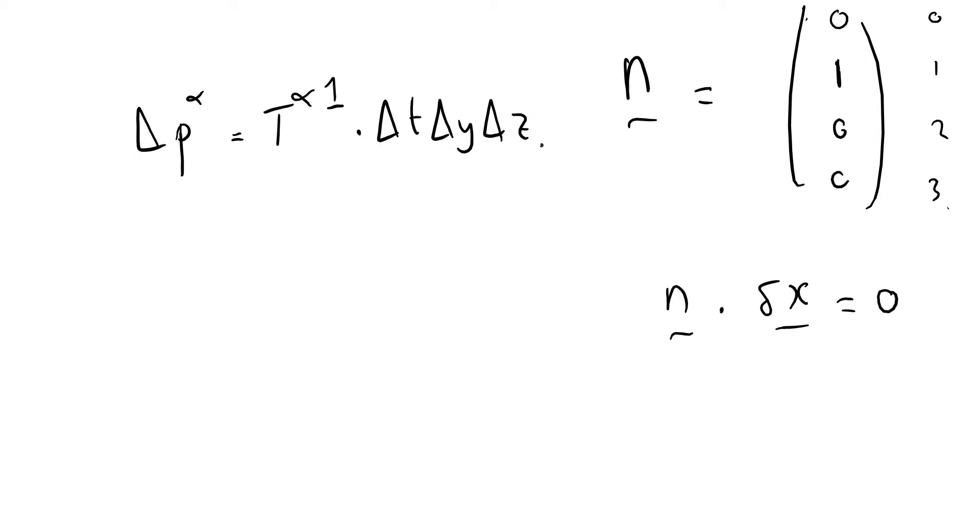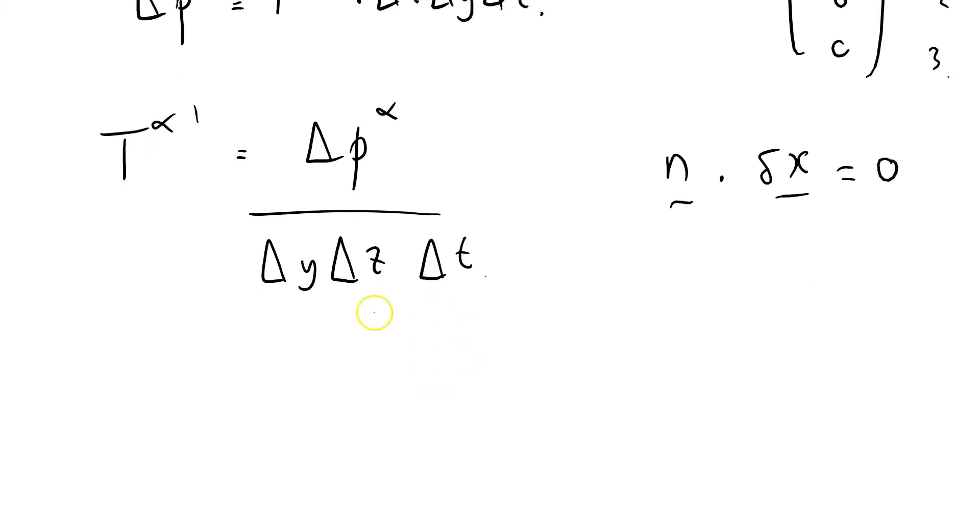Now I'm going to rewrite it in a slightly different way. Alpha 1, delta p alpha, which is of course the full momentum in my control volume, delta y delta z delta t. And this thing here, if I just draw my control volume, it's got sides delta x, delta y and delta z.